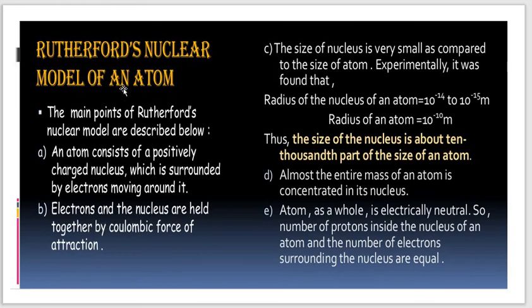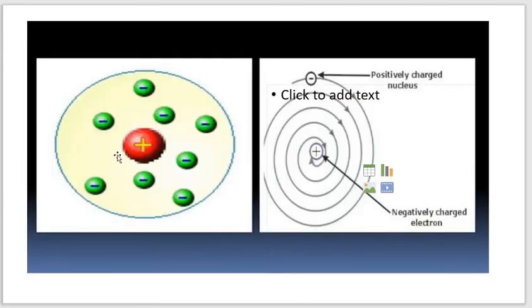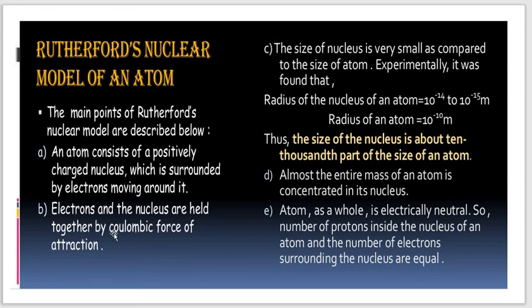It is known as the Rutherford Nuclear Atom Model. The main points of Rutherford's nuclear model are: An atom consists of a positively charged nucleus which is surrounded by electrons moving around it. The size of the nucleus is very small as compared to the size of the atom. Experimentally, it was found that the radius of the nucleus of an atom is about 10⁻¹⁴ to 10⁻¹⁵ meter.